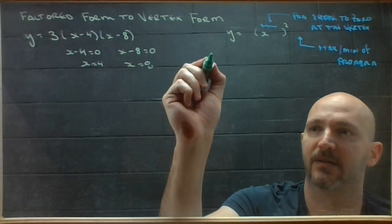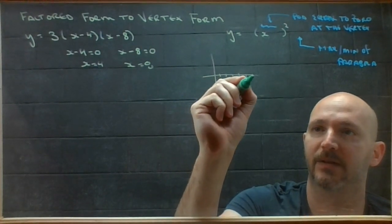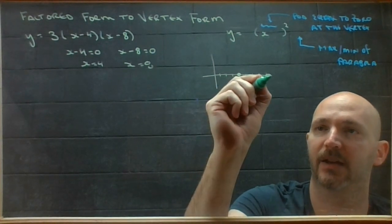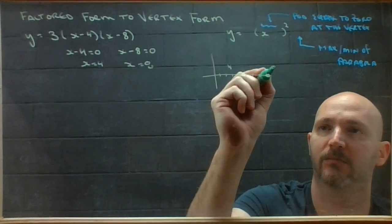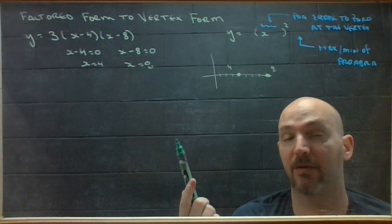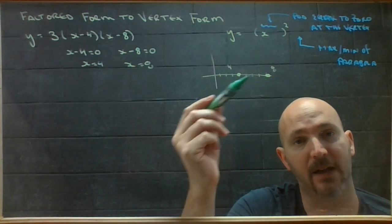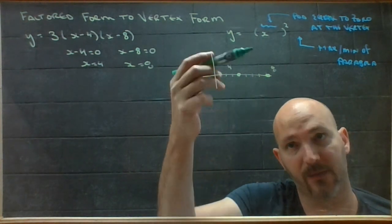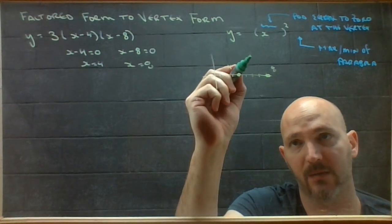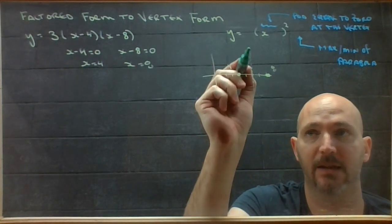So if I were to just sort of quick sketch this thing, I have an x-intercept here, and I have an x-intercept here. Now if you can see every parabola we've ever sketched in your head, the vertex is always dead-centered. It's right on the line of symmetry. So I just have to find where the line of symmetry would be. Halfway between 4 and 8 is 6.